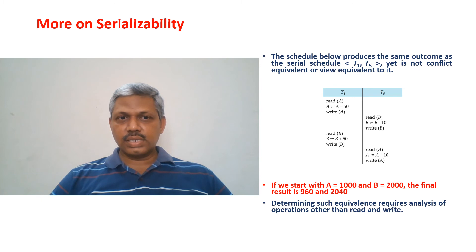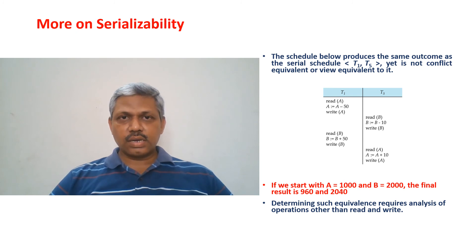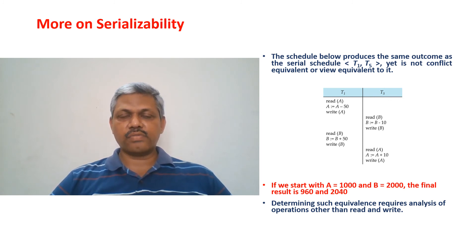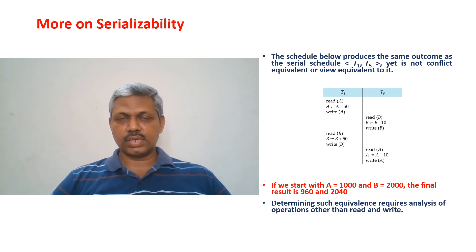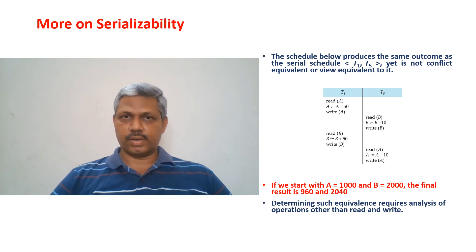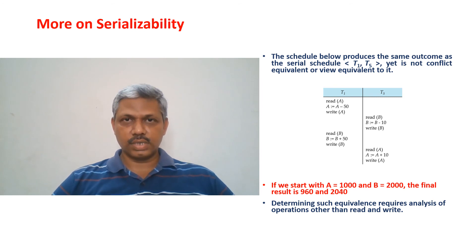Now is this schedule view serializable or conflict serializable? For conflict serializability, we would need to swap write B of T5 with read B of T1, but these are conflicting operations and cannot be swapped. So we cannot move the block of operations on B by T5 below that of T1, meaning it cannot be made into a serial schedule. The schedule is not conflict serializable.